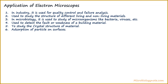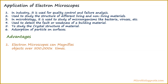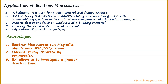Now we will talk about the advantages of electron microscopes. Electron microscopes can magnify objects over 500,000 times. Material is rarely distorted by preparation. Electron microscopes allow investigation of a greater depth of field, and can resolve objects up to 200 nanometers.